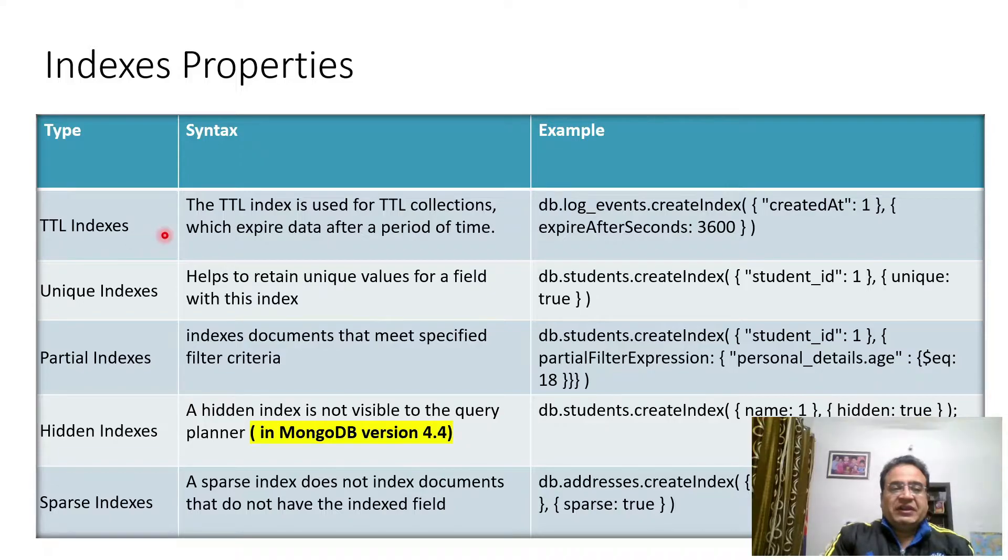First of all is TTL indexes. The full form is Time to Live indexes. Basically it is used for collections which are going to expire after a certain period of time. You can think of a scenario like logs - we might need a log for maybe one day, two days, seven days, two weeks, three weeks, four weeks time. The syntax is collection name create index created at one expire after second 3600 seconds - it is going to expire after one hour.